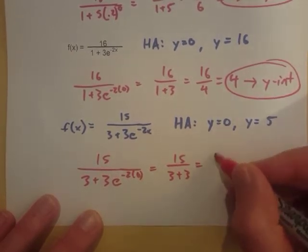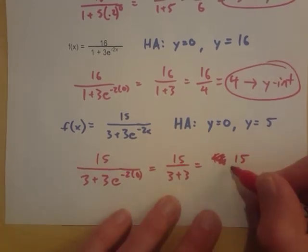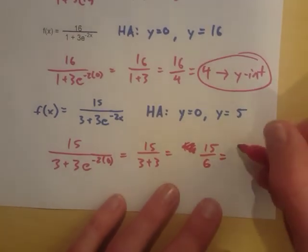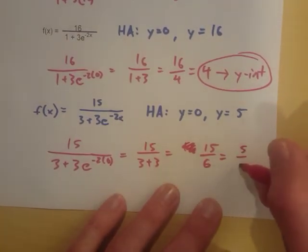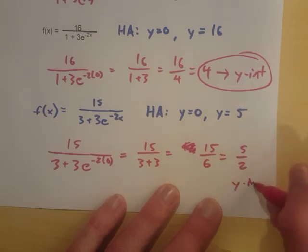It's not going to be quite as nice on this one. It'll be 15 over 6, and we can reduce that to 5 halves. And that will be our y-intercept for this last one.